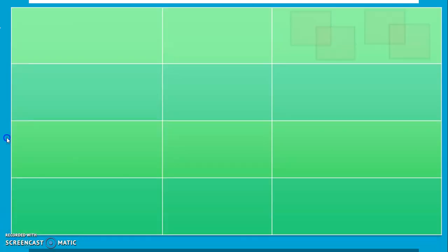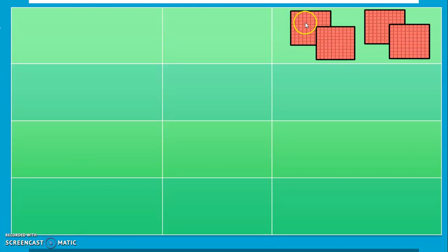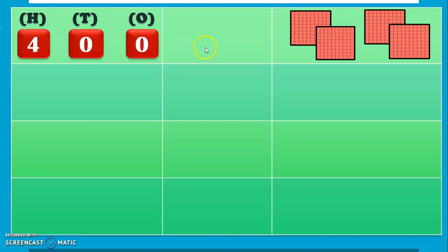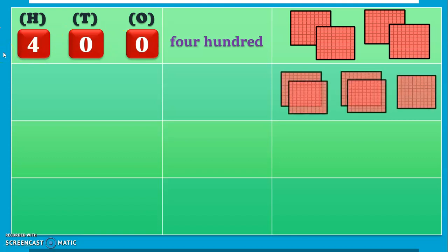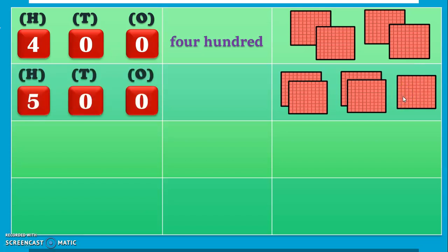In counting in 100s, the next number we will be seeing: how many blocks of 100s do we have here? 1, 2, 3, and 4. So it is number 400. 4 in the 100s place, 0 in the 10s place, and another 0 in the 1s place. The number name for the same is Four Hundred. The next number: 1, 2, 3, 4, and 5 — it represents 500. The number name for the same will be Five Hundred.